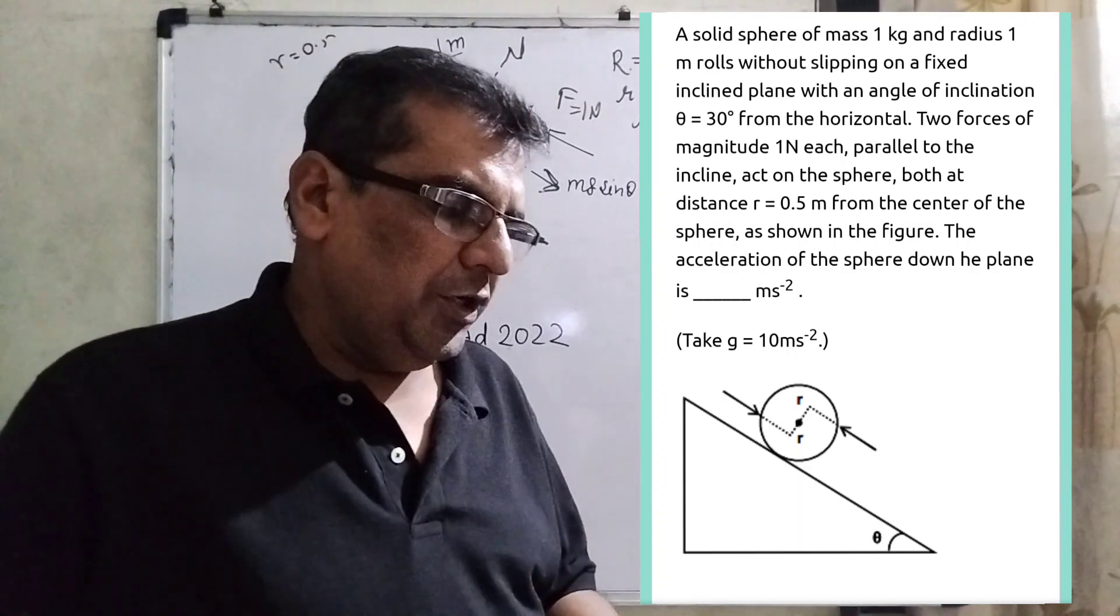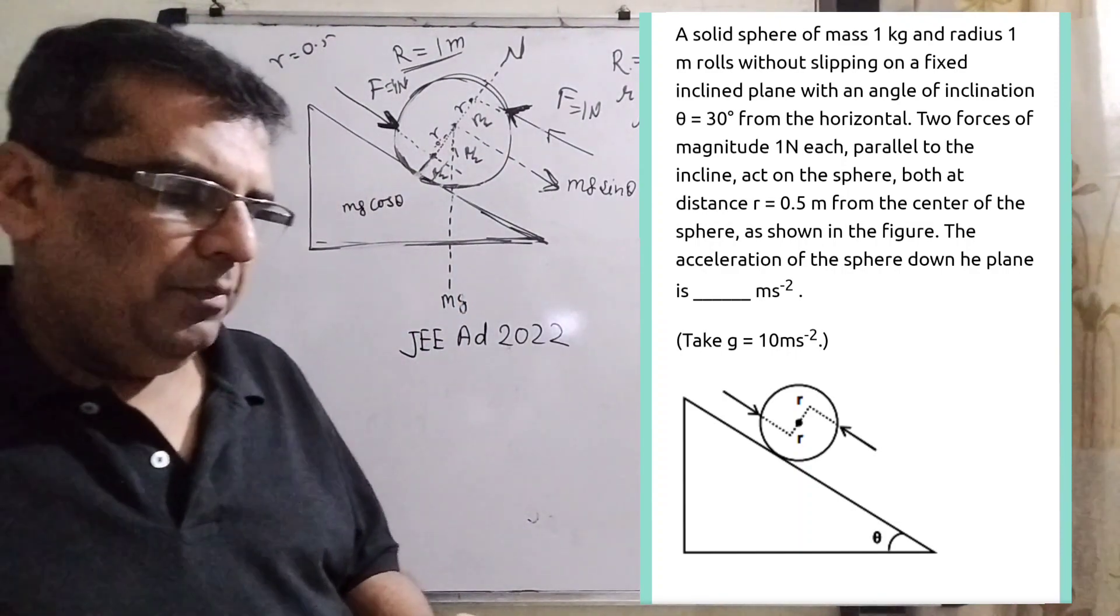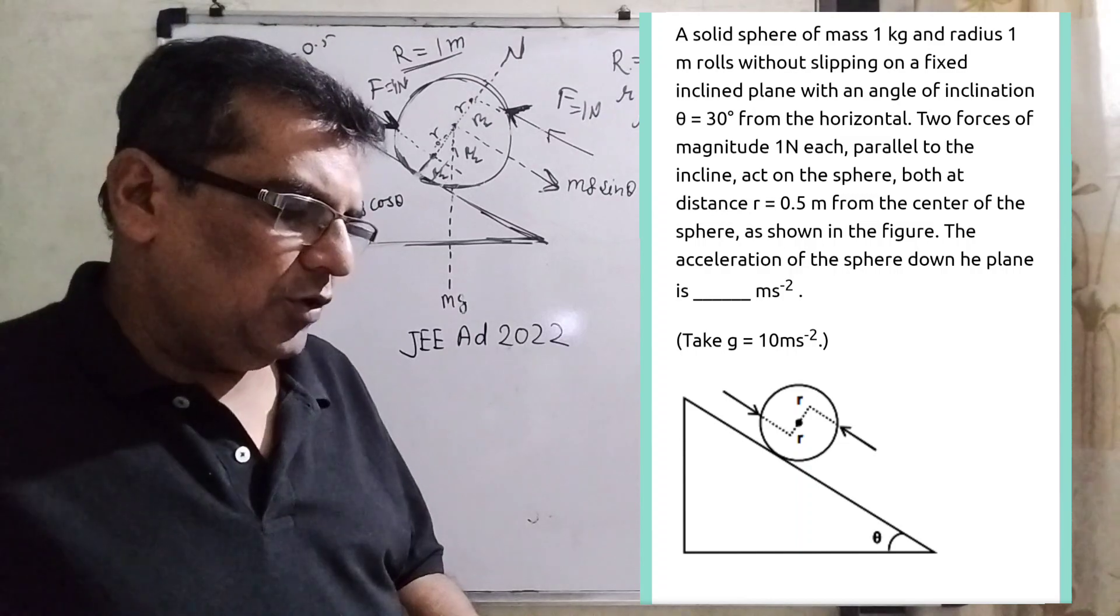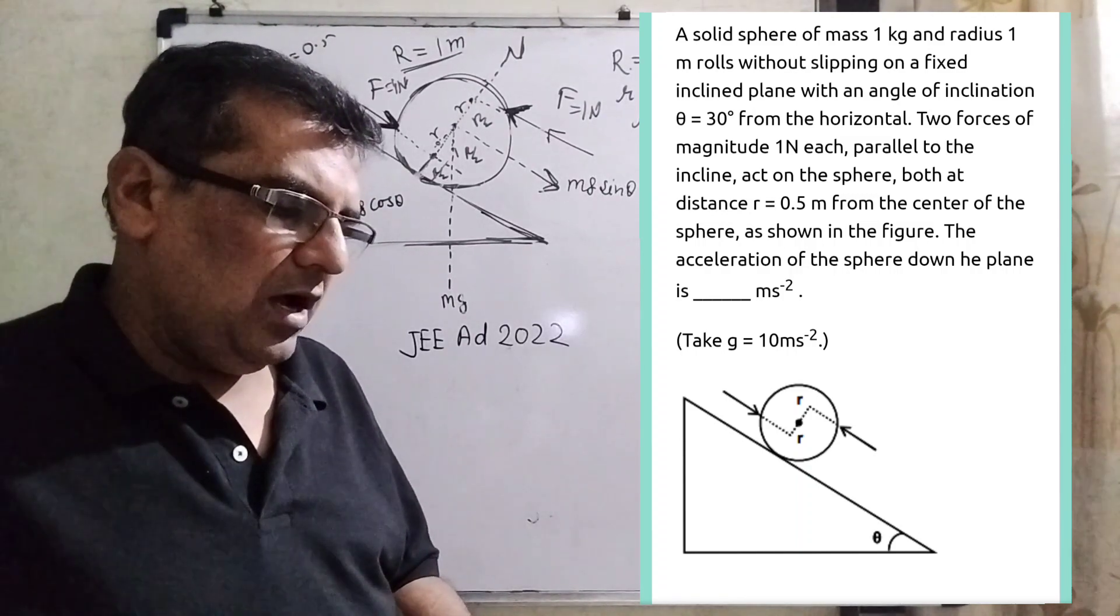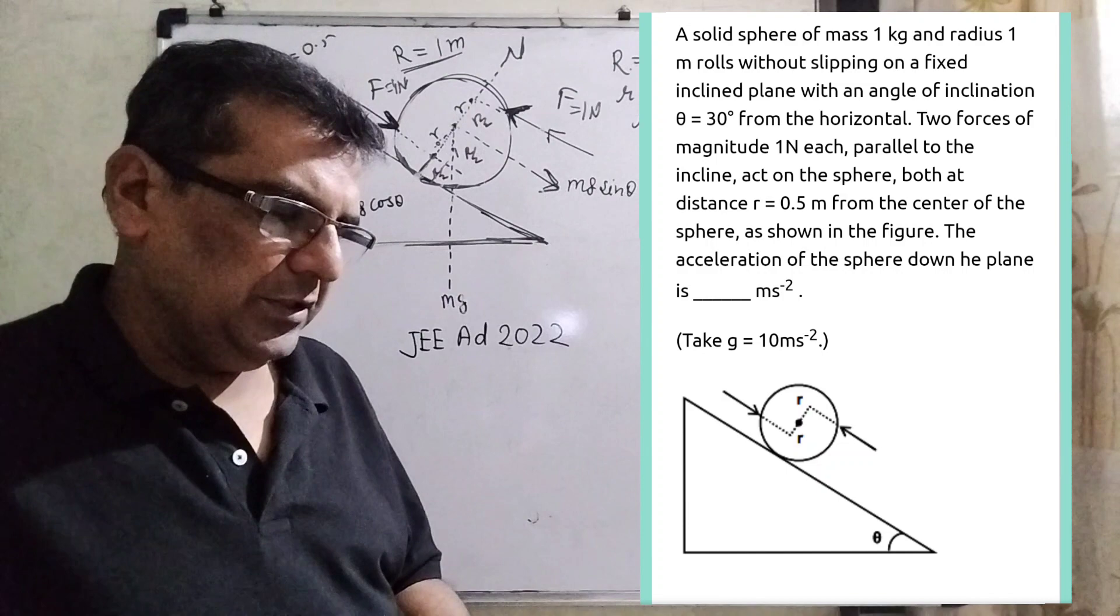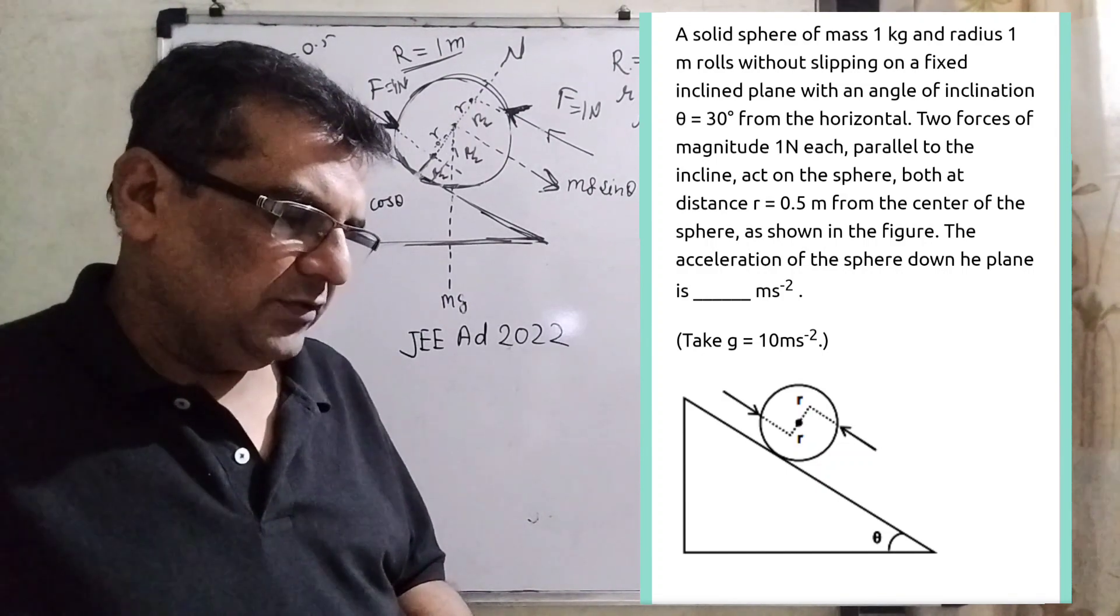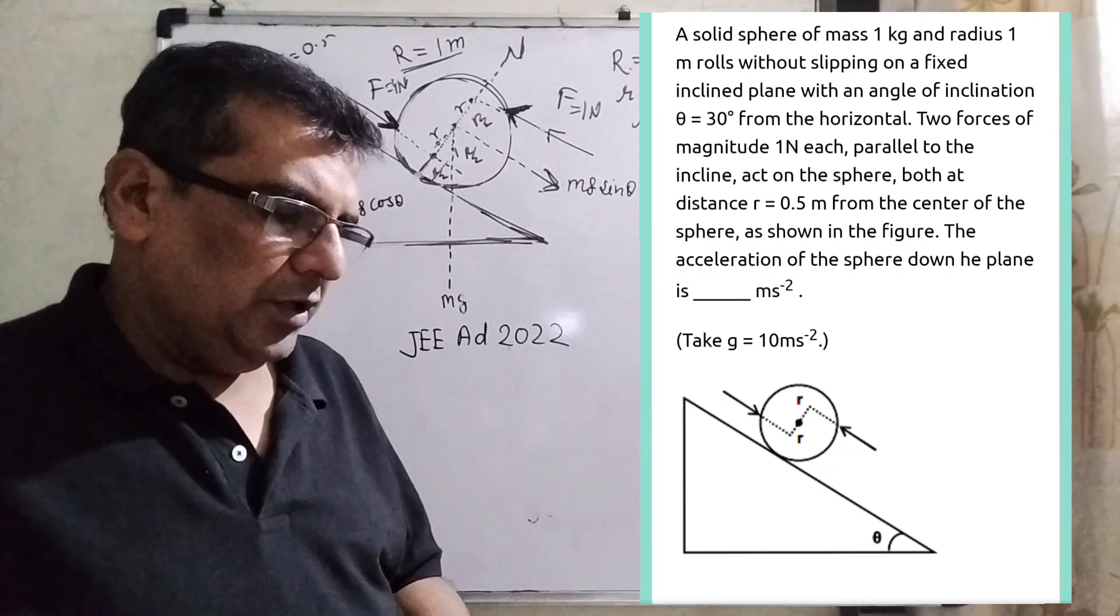Two forces of magnitude 1 Newton each parallel to the incline act on the sphere, both at distance r equal to 0.5 meter from the center of the sphere according to the figure.